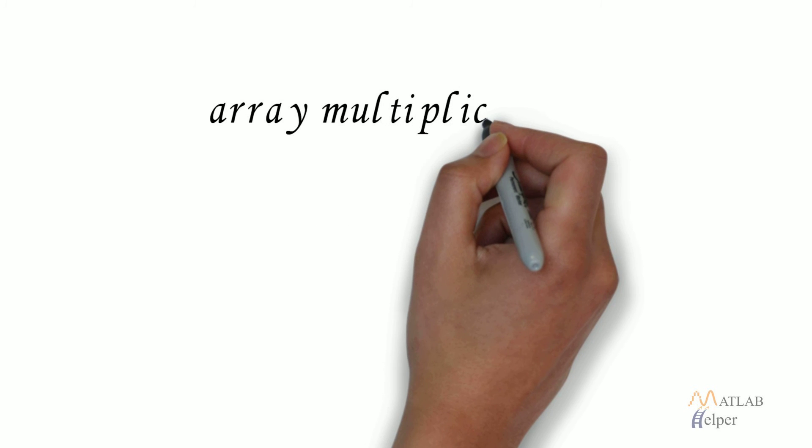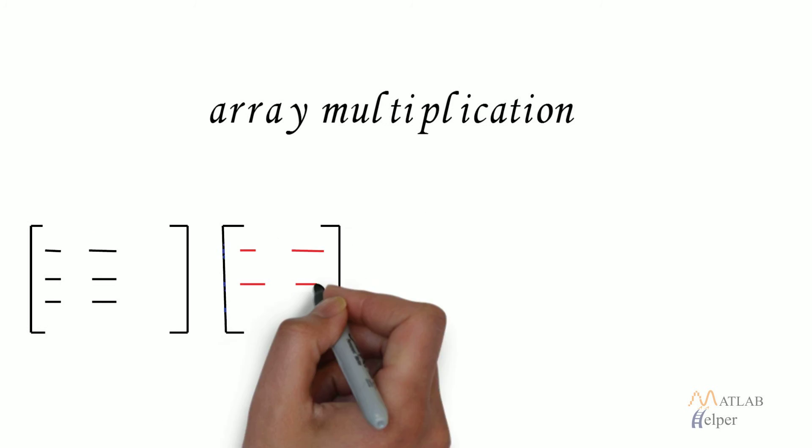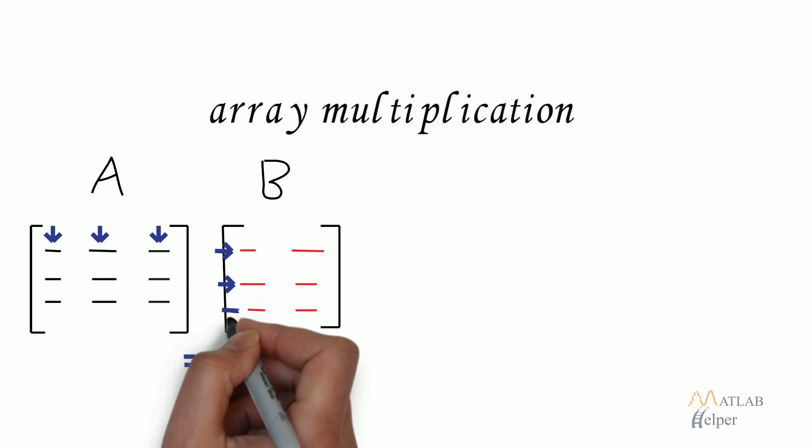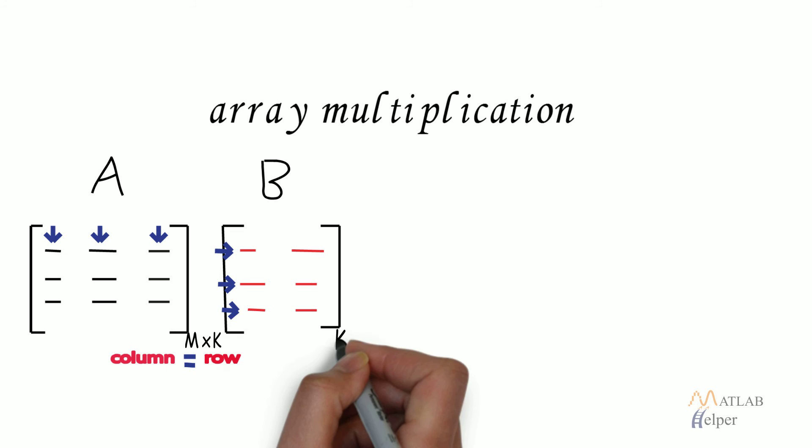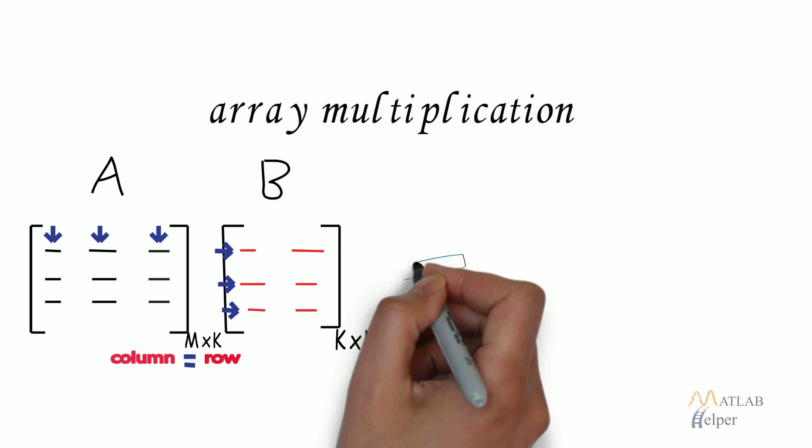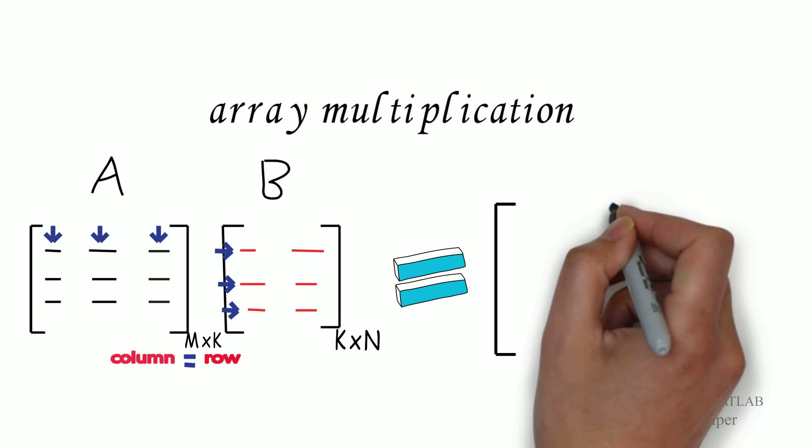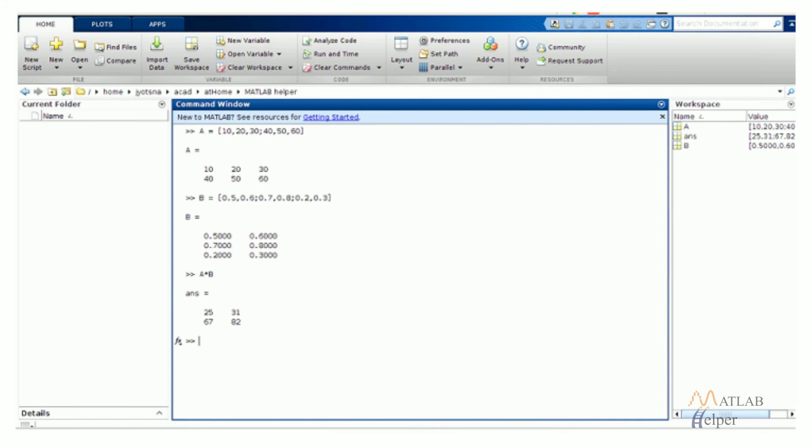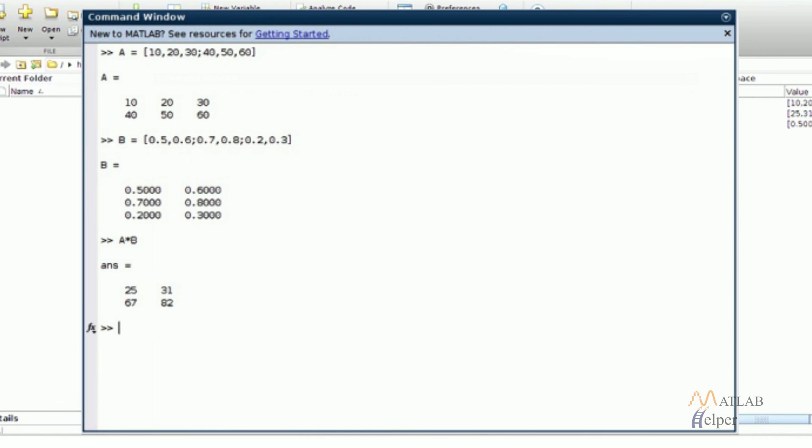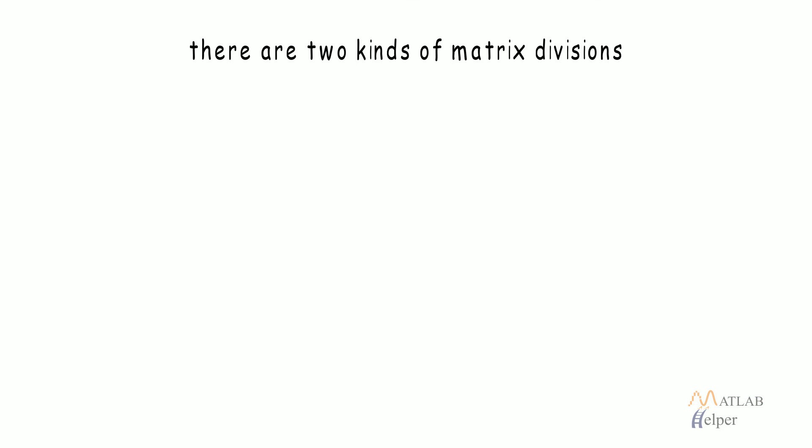Besides this, there are different rules for array-array multiplication and division. While performing array multiplication, it is necessary that columns of the first array and rows of the second array should be equal in number. Therefore, if the size of two matrices are m cross k and k cross n respectively, the resulting matrix after multiplication will be of size m cross n. The image shows you array-array multiplication.